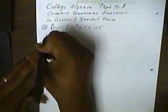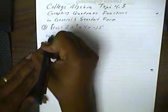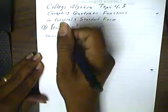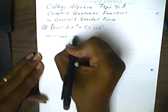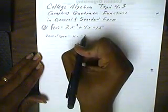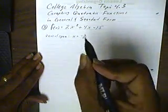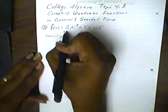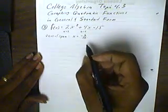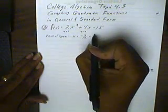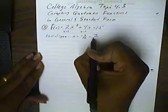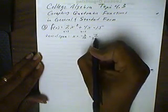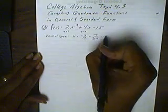First, we're going to find the axis of symmetry. The formula for the axis of symmetry is the opposite of b all over 2a. Here, b is the number in front of x, and a is the number in front of x squared. So this will be the opposite of negative 4, all over 2 times 2, which ends up being negative 1.